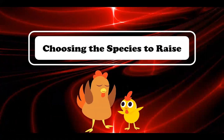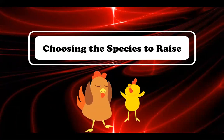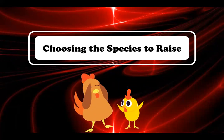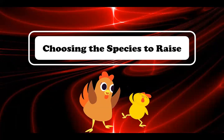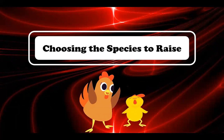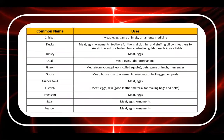The choice of species to raise depends on the purpose for raising them. All 11 poultry species produce meat and eggs, but some are raised for other purposes. For chicken: meat, eggs, game animals, ornaments, and medicine. For duck: meat, eggs, ornaments, feathers for thermal clothing and stuffing pillows, feathers to make shuttlecock for badminton, and controlling golden snails in rice fields.